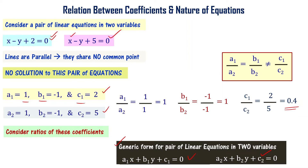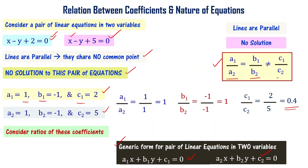As we can see from the graph, lines are parallel and there exists no solution. When the coefficient ratios satisfy a1/a2 = b1/b2, but that is not equal to c1/c2, the lines are parallel. There is no solution — this is an inconsistent set of linear equations. Please note this relation.